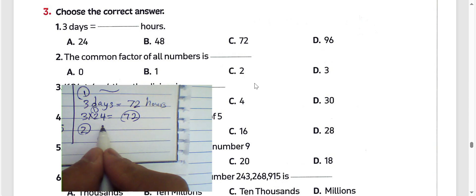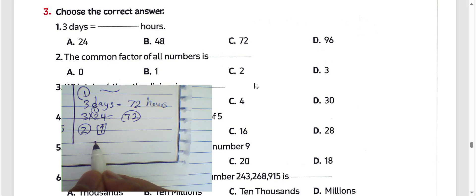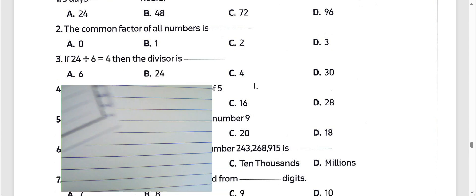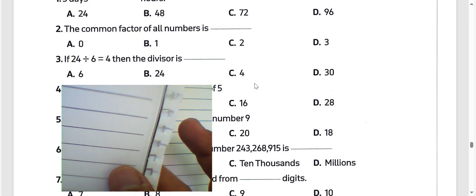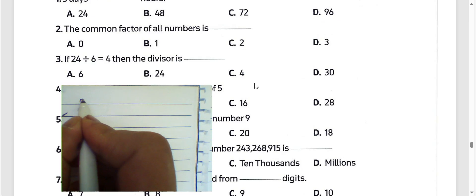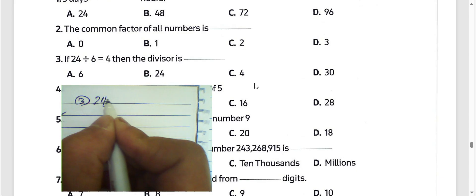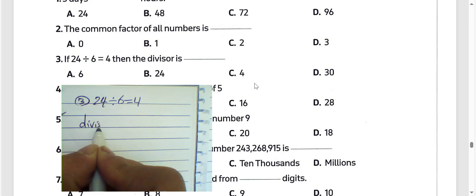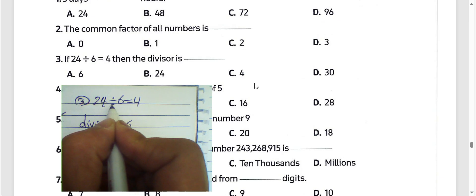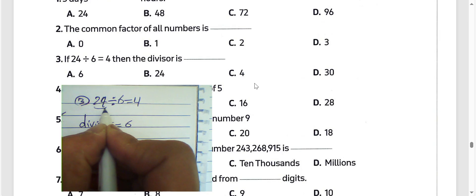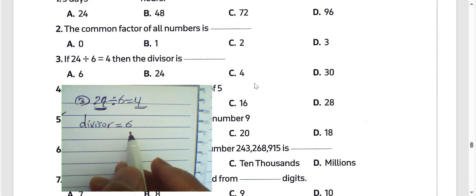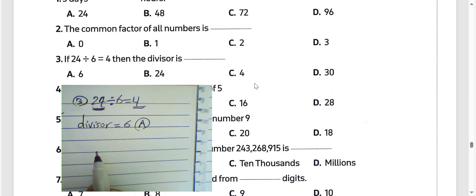The common factor of any number is 1, but the common multiple for all numbers is 0, because a number can divide by 1. Question number 3: 24 divided by 6 equals 4. The divisor here is 6, and 24 is the dividend. The quotient is 4. So the divisor is 6. Choose that answer.